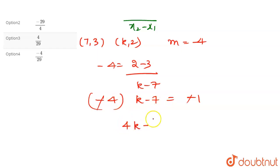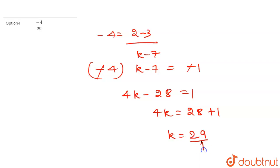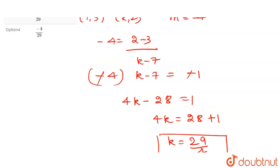So 4k - 28 = 1. Therefore, 4k = 28 + 1 = 29, and k = 29/4. So for the slope to be -4, k should equal 29/4, which is option 1. Thank you.